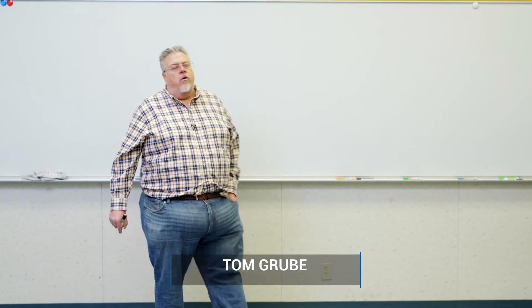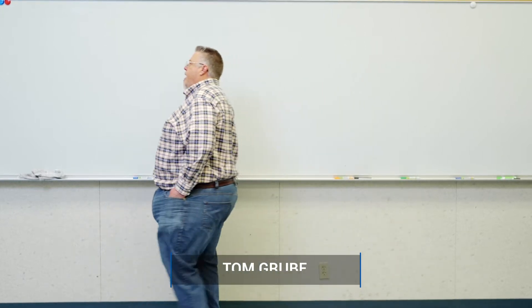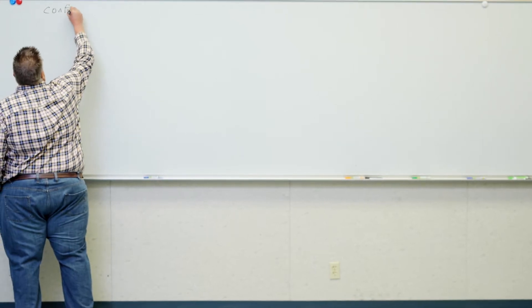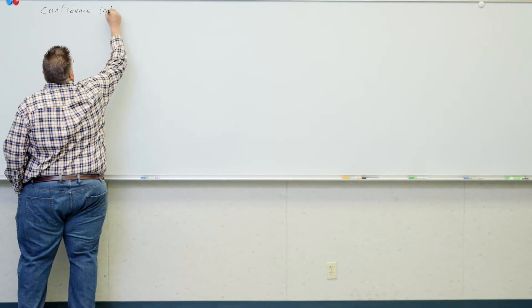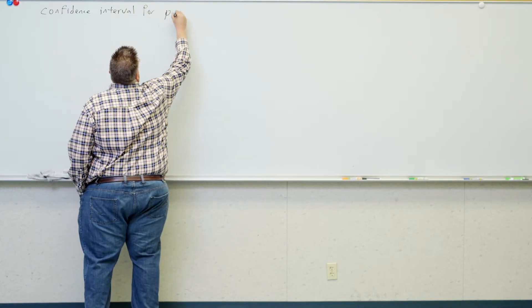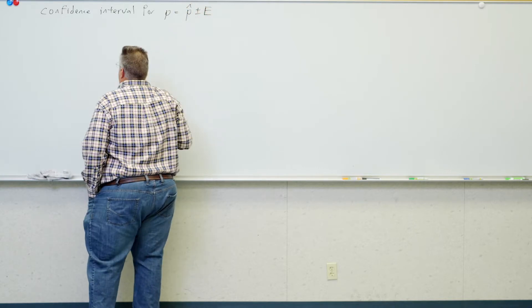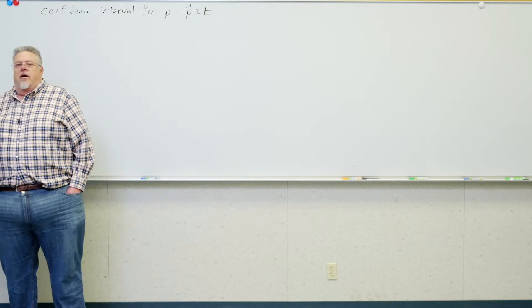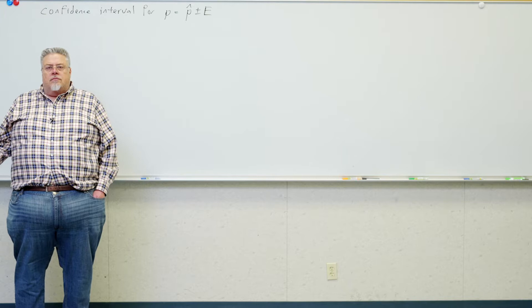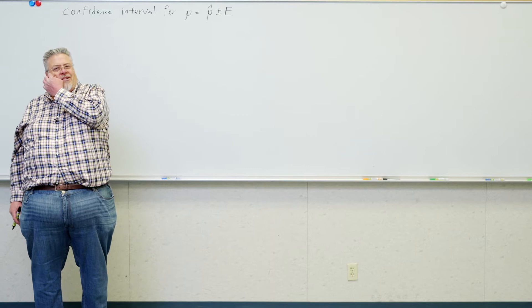So we're making confidence intervals for P, and my formula for a confidence interval for P is P-hat plus or minus E. And we saw the trade-off between we'd like E to be small, but we still want to have confidence, and we've got to balance those things out.